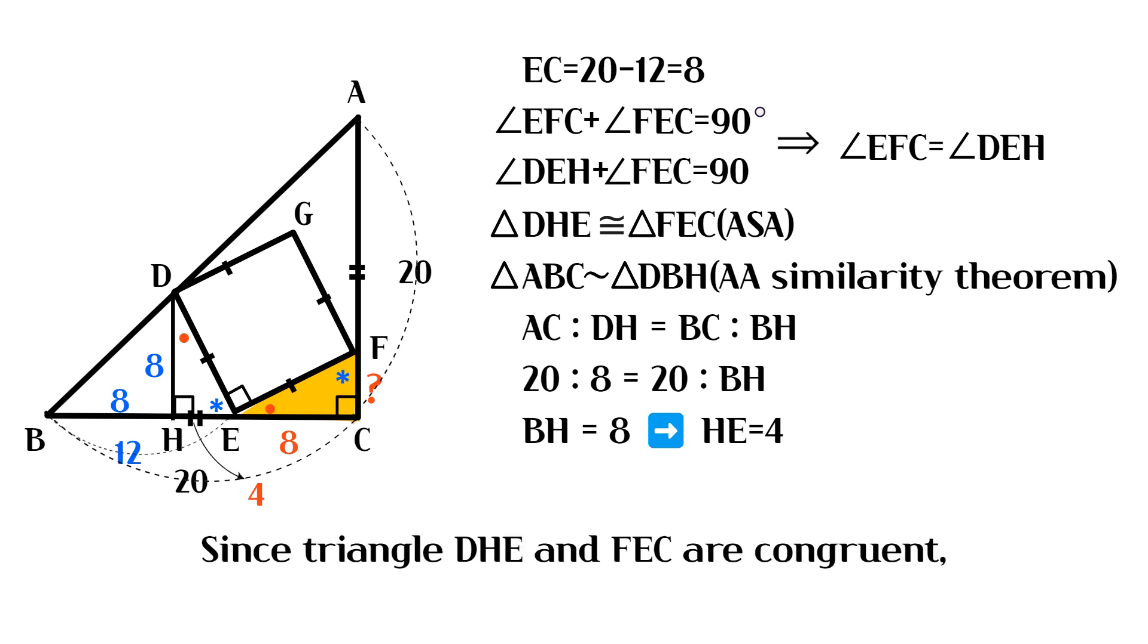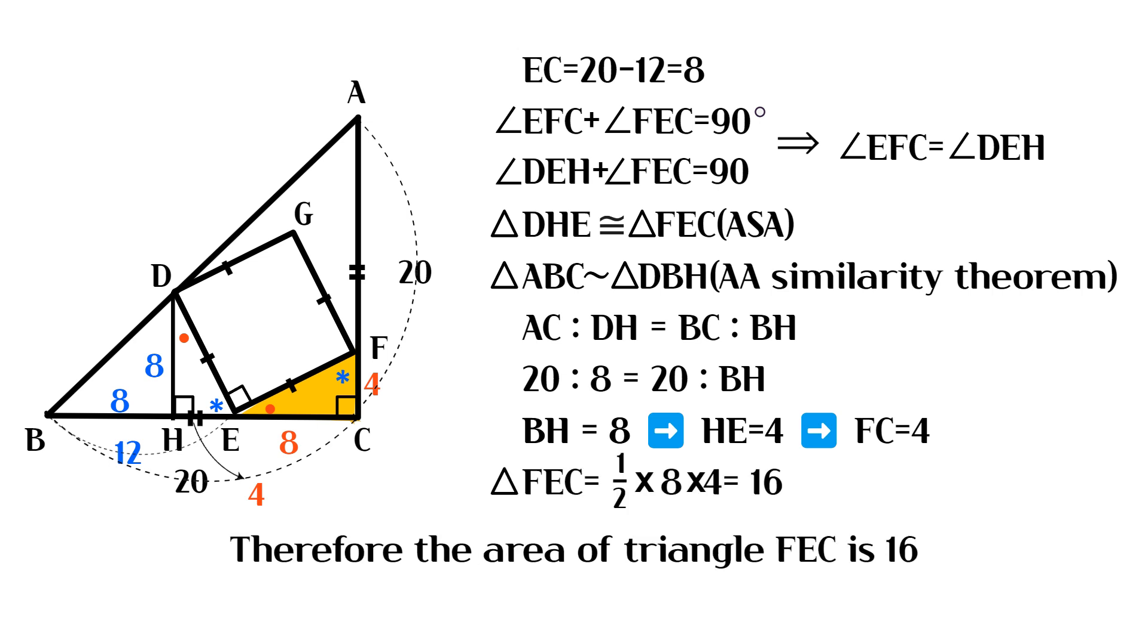Since triangle DHE and FEC are congruent, the length of FC is also 4. Therefore, the area of triangle FEC is 16.